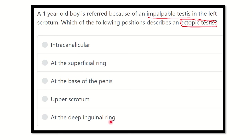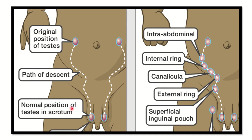The options are: intracanalicular, at the superficial ring, at the base of the penis, upper scrotum, and at the deep inguinal ring. We can see the testis and the normal pathway of descent. First it is located in the posterior abdominal wall, then it descends gradually. It passes through the deep inguinal ring, through the inguinal canal, then through the external ring or superficial inguinal ring, and finally reaches into the scrotum.